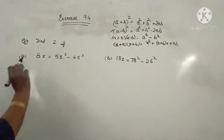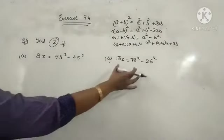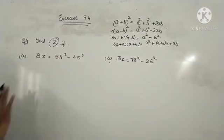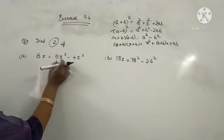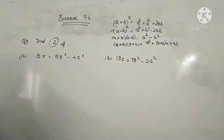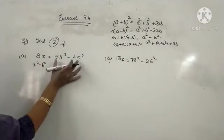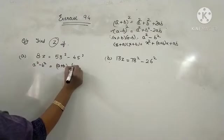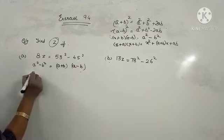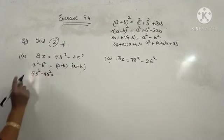Question number 4. You are supposed to find the value of Z. If these relations are given to you. First of all, we will solve the A part. See, 8Z is equal to 53 square minus 45 square. So we will use the formula A square minus B square for this part. It is equal to A plus B into A minus B. So find the value of 53 square minus 45 square using this formula.